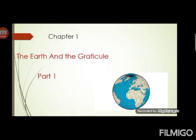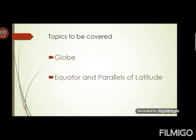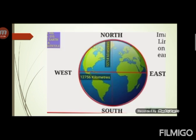Graticule means the network of lines of latitudes and longitudes. In this chapter, we will be covering the topics: globe, equator and parallels of latitude. Observe this figure — it shows the length of east-west and north-south diameter of the earth. Through this we can understand the size of the earth. The east-west size of the earth is 12,756 km and north-south is 12,714 km.